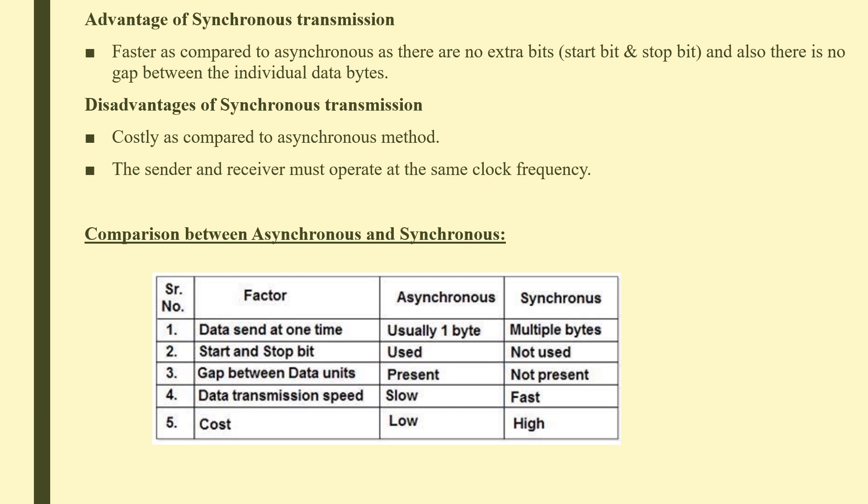Comparing asynchronous and synchronous transmission: Asynchronous sends one byte at a time; synchronous sends multiple bytes. Asynchronous uses start and stop bits; synchronous does not. Asynchronous has gaps between bytes; synchronous has none. Therefore asynchronous is slower and has lower cost, while synchronous is faster but more costly.